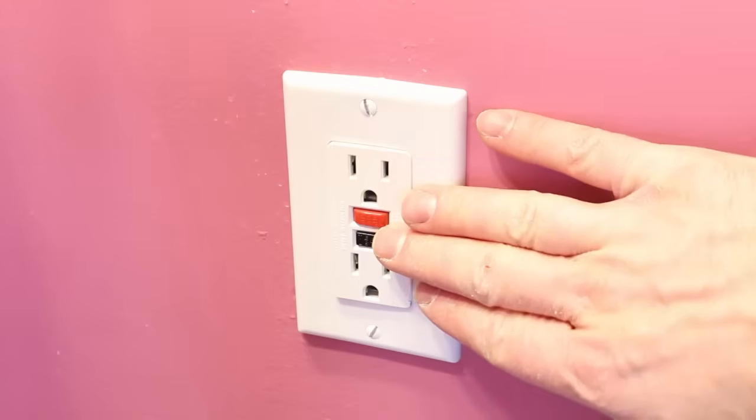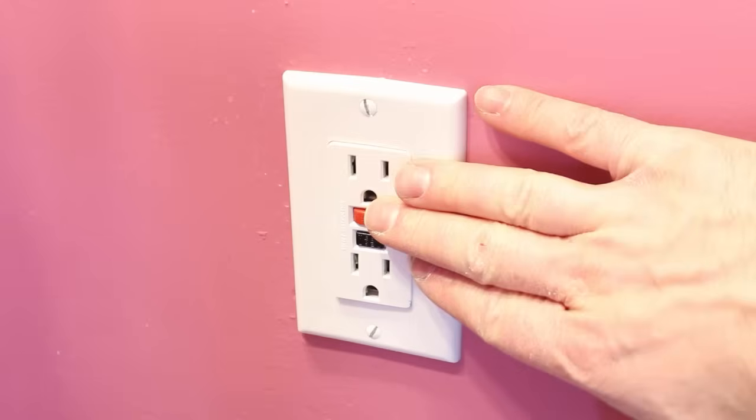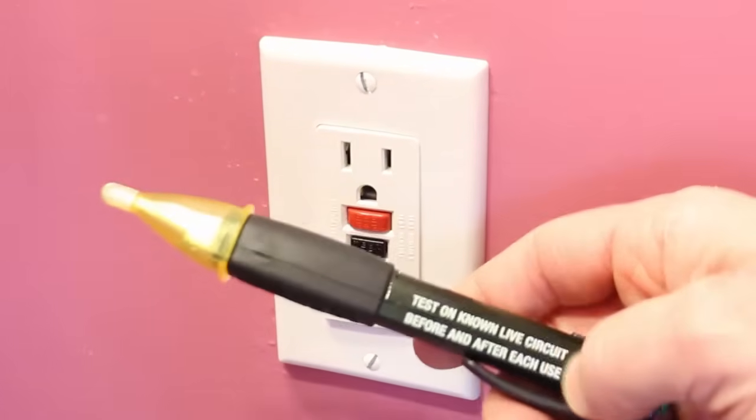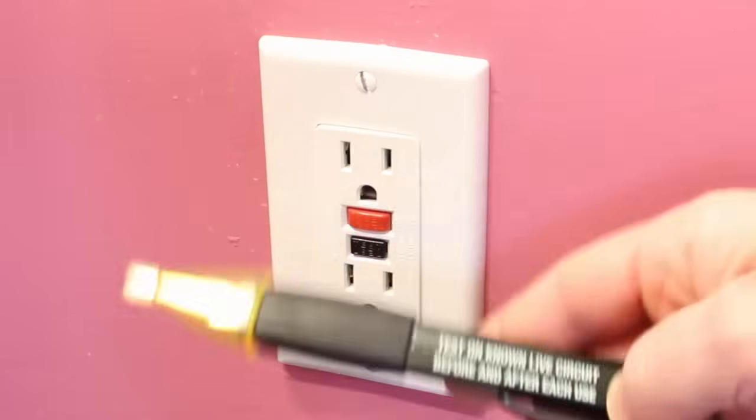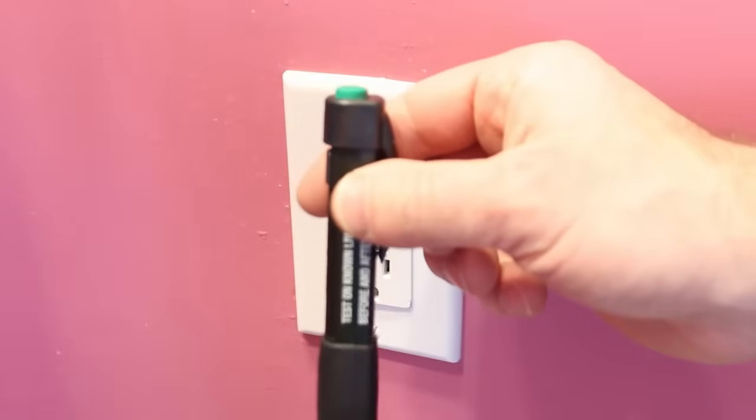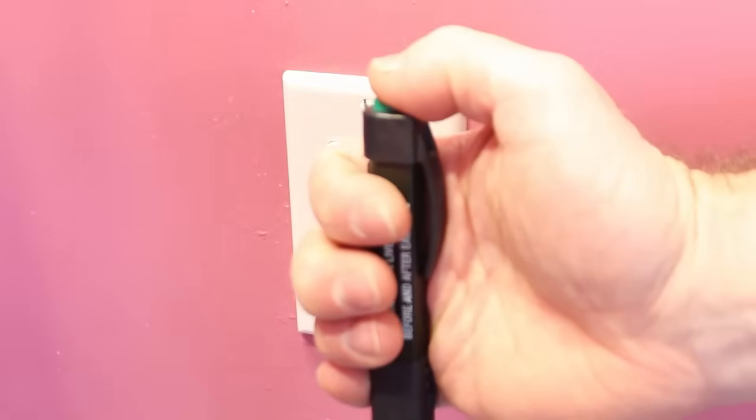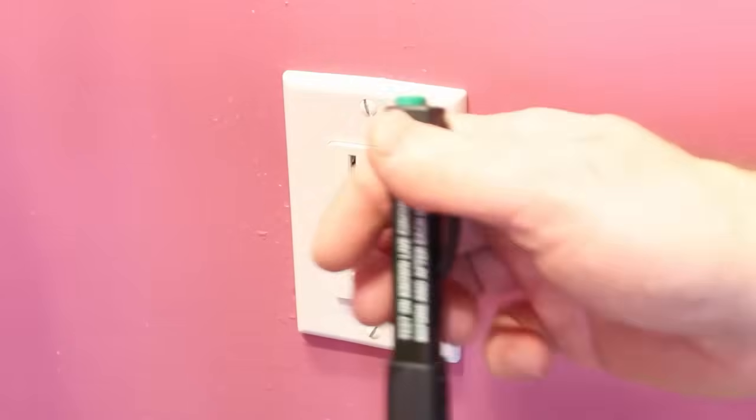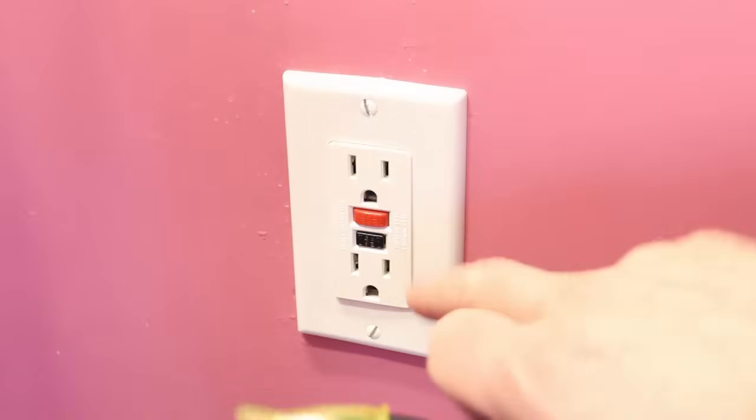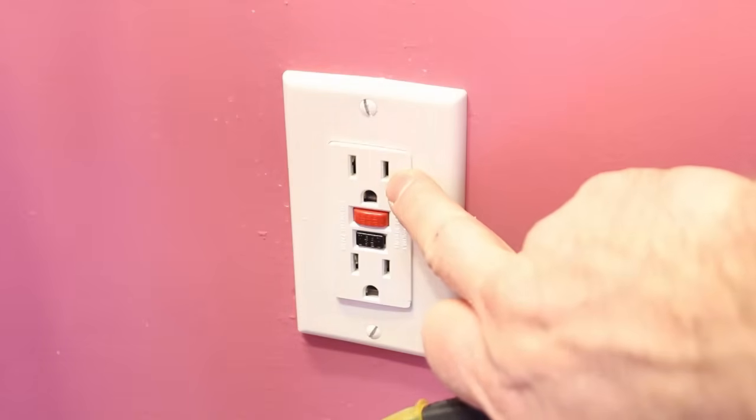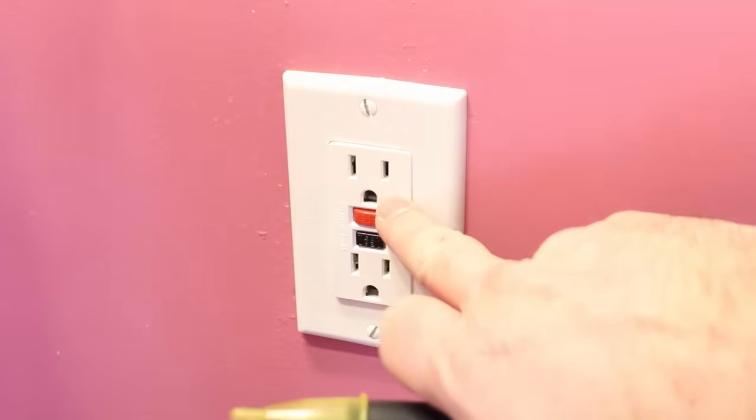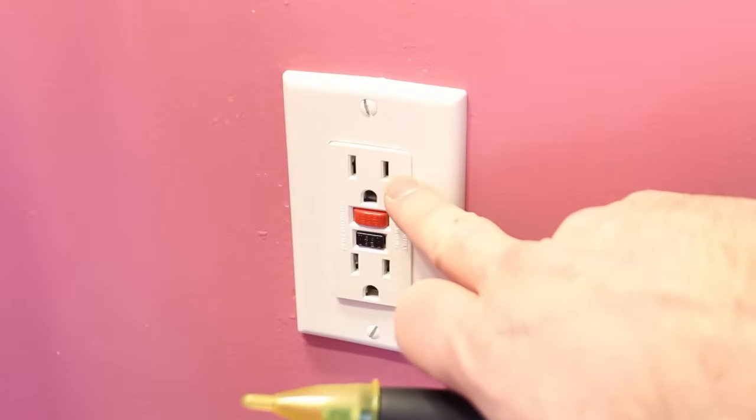Before replacing an outlet, always test to make sure that there's power running to it. I highly recommend using a voltage detector like this one. It costs about $16, and any DIYer should have one in their toolbox. Simply turn on the voltage detector by pressing down on a button, and then place it into the hot slot of your outlet. If it lights up like that, that means there's power running to this outlet.